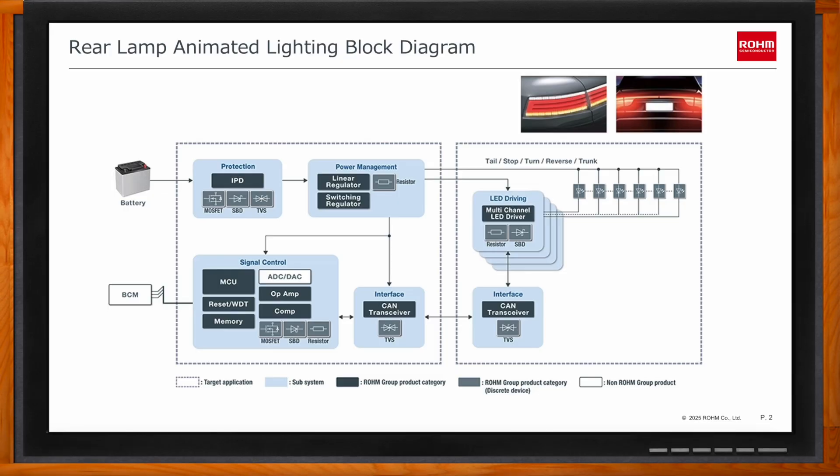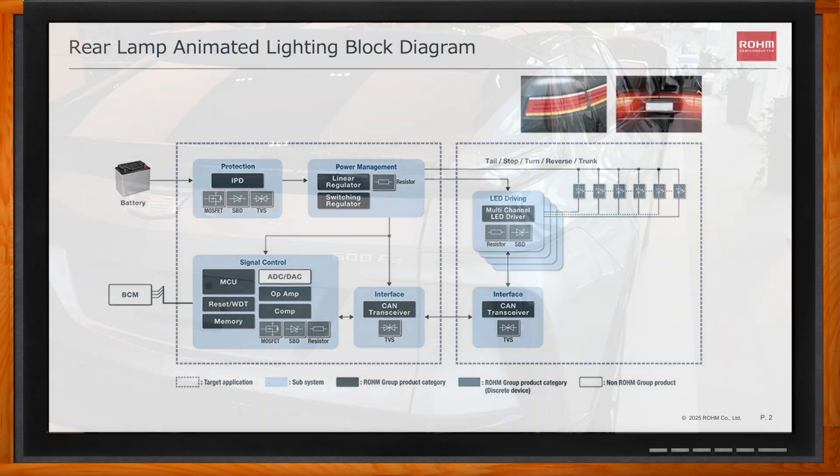Everything shown in dark blue is a component that Rohm supplies. Rohm has a very strong portfolio for automotive lighting and is actually capable of supplying almost every IC in the lighting module and tail light. The purpose of today's presentation is really to highlight Rohm's multi-channel current sink LED driver, which is used in lamps both with and without animation.